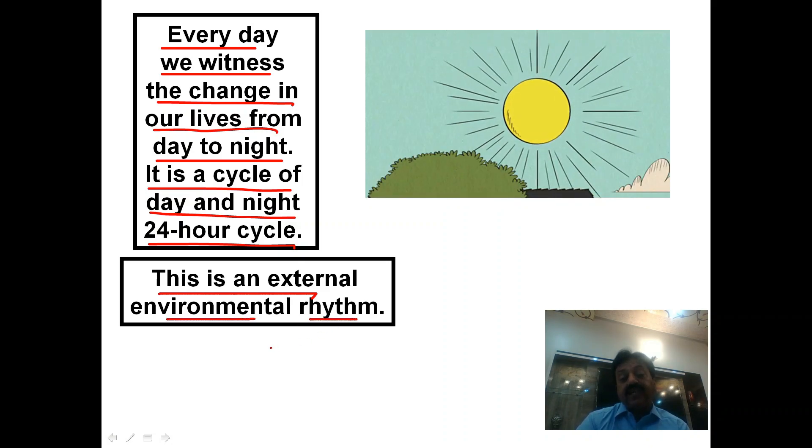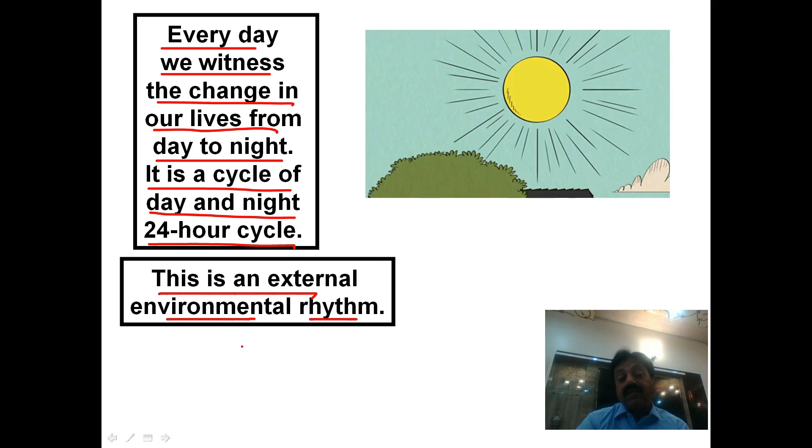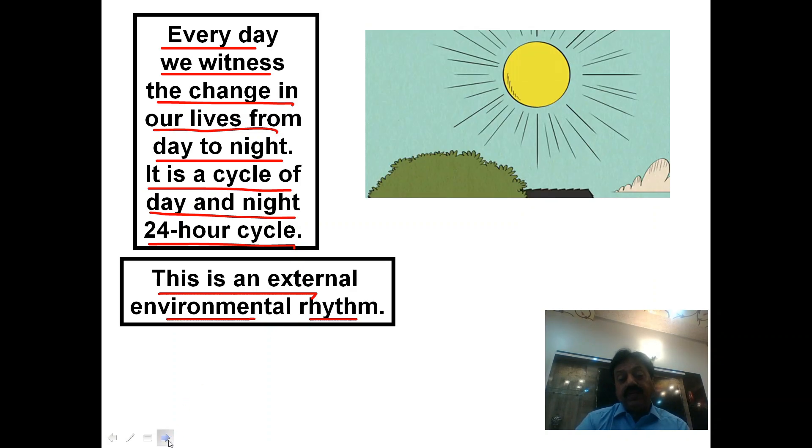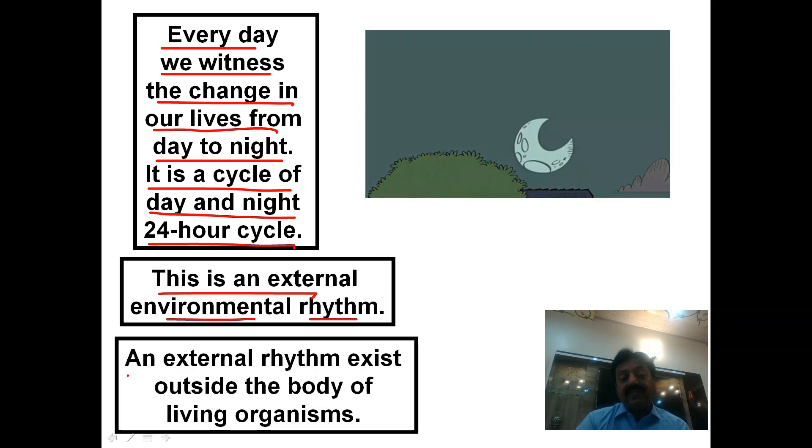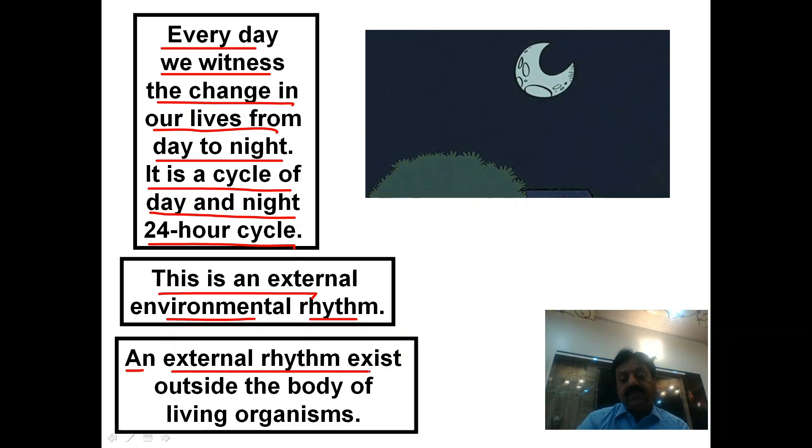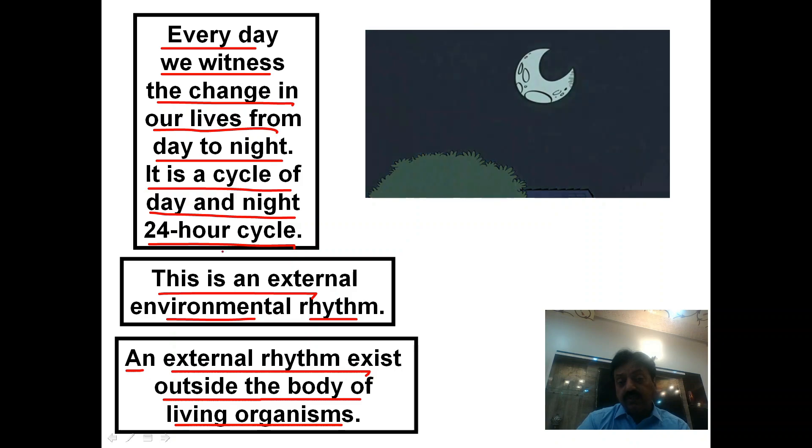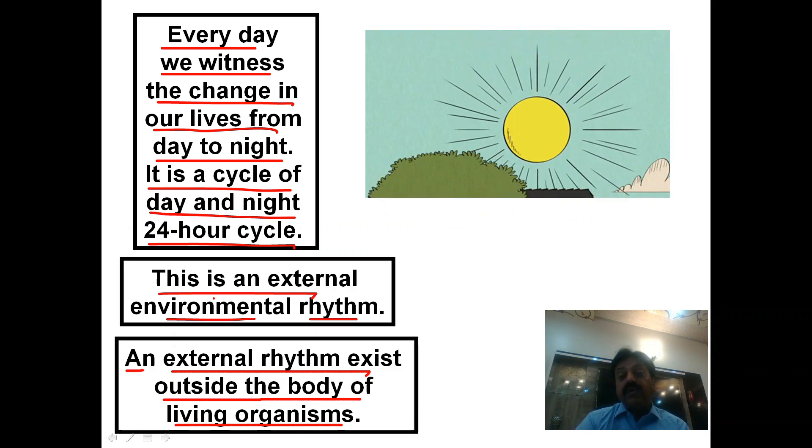This is an external environmental rhythm. Environmental cycles exist outside our body. The light period and darkness period exist outside the body. External rhythms exist outside the body of living organisms, while internal rhythms operate inside the body and are also called biological rhythms.